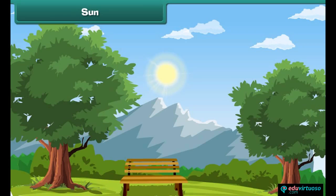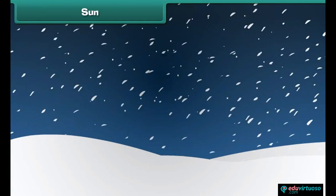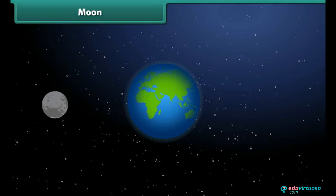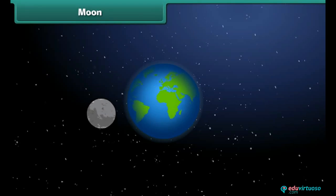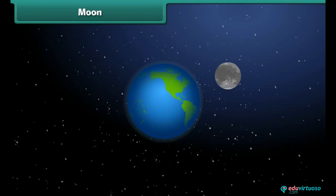The Sun is the head of the solar system. It is a star which emits its own light. Sunlight is very important for the existence of life on Earth. Without sunlight, Earth would have been very cold and could not have supported life.